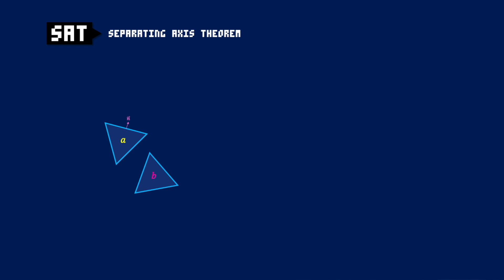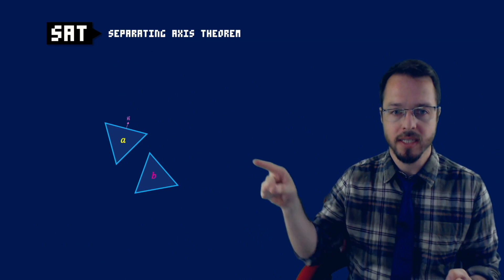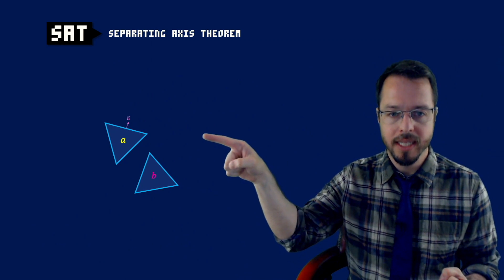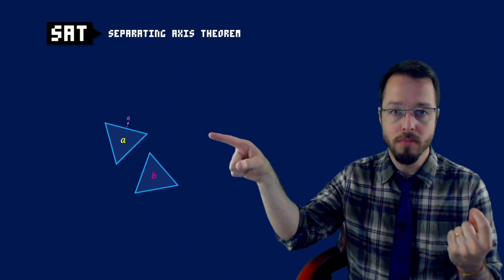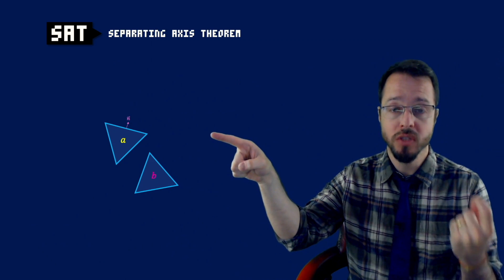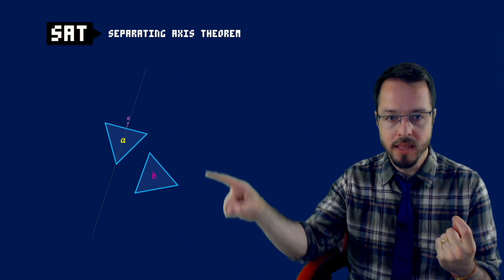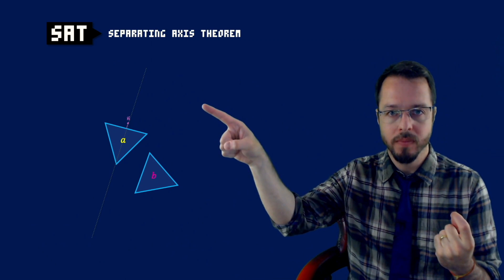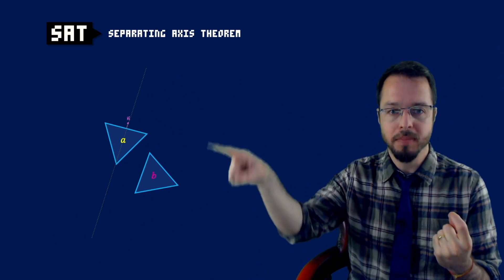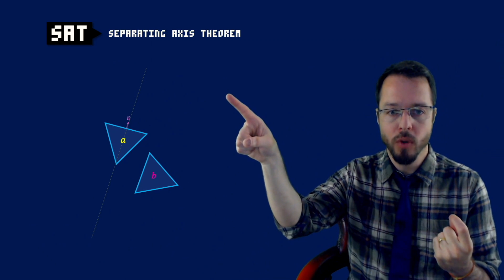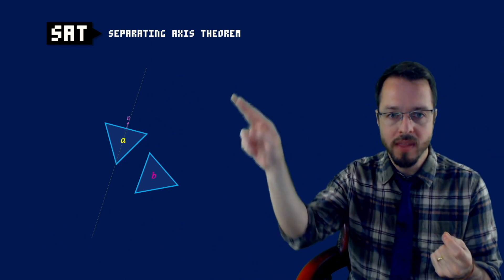If we find at least one of these axes that is separating — if we find a gap between them — then we can safely say that these two bodies are not colliding. The algorithm says we're going to start one by one, look at one normal, test if there is a separation, and if we don't find a separation we go to the next normal. If any one of these normal axes finds a separation between those two bodies, we can already say there is no collision — return false.